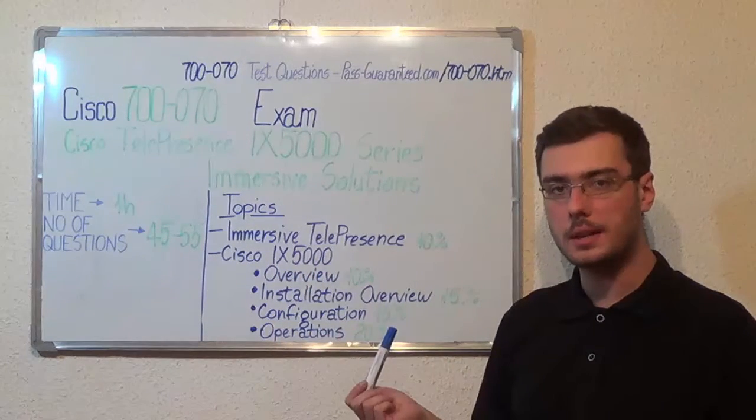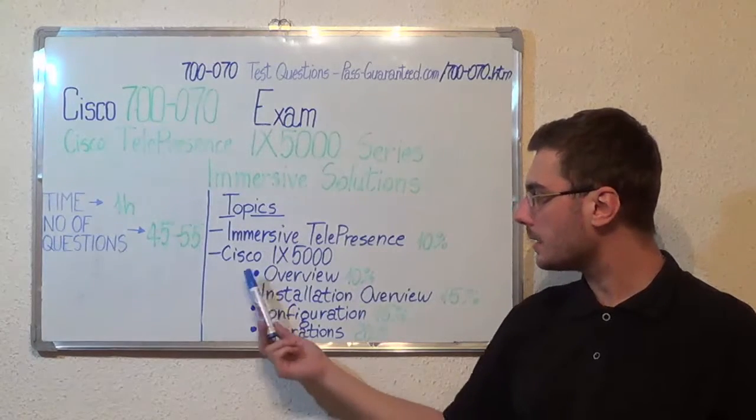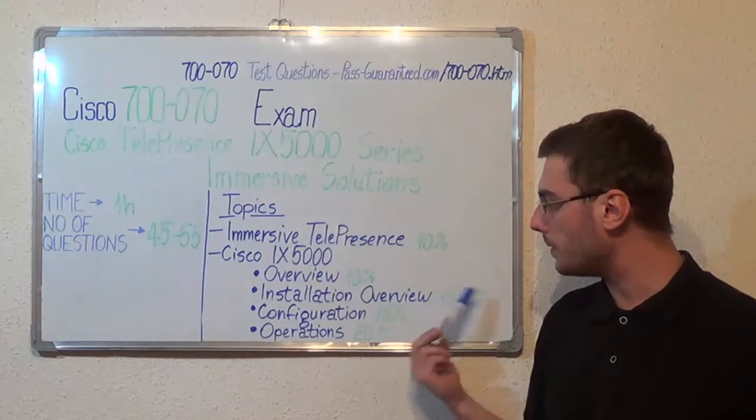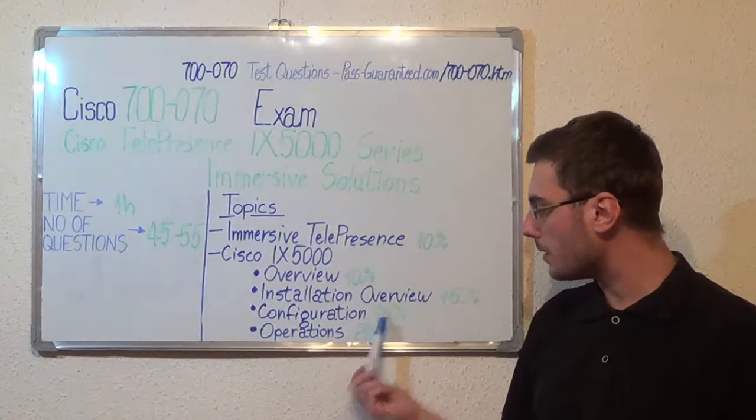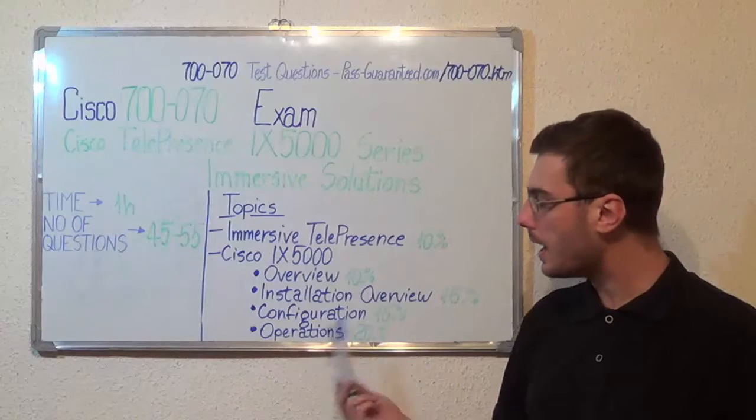also with 10%. After that, Cisco IX 5000 Installation Overview, with 15%. Cisco IX 5000 Configuration, also with 15%. And the last one,